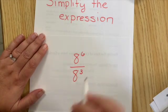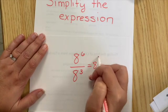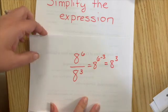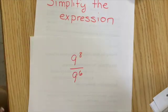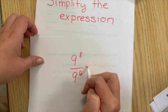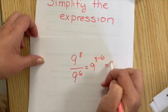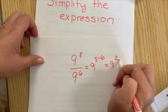Try this one. This would be eight, the six minus three, or eight to the third. This one would be nine, eight minus six, nine squared.